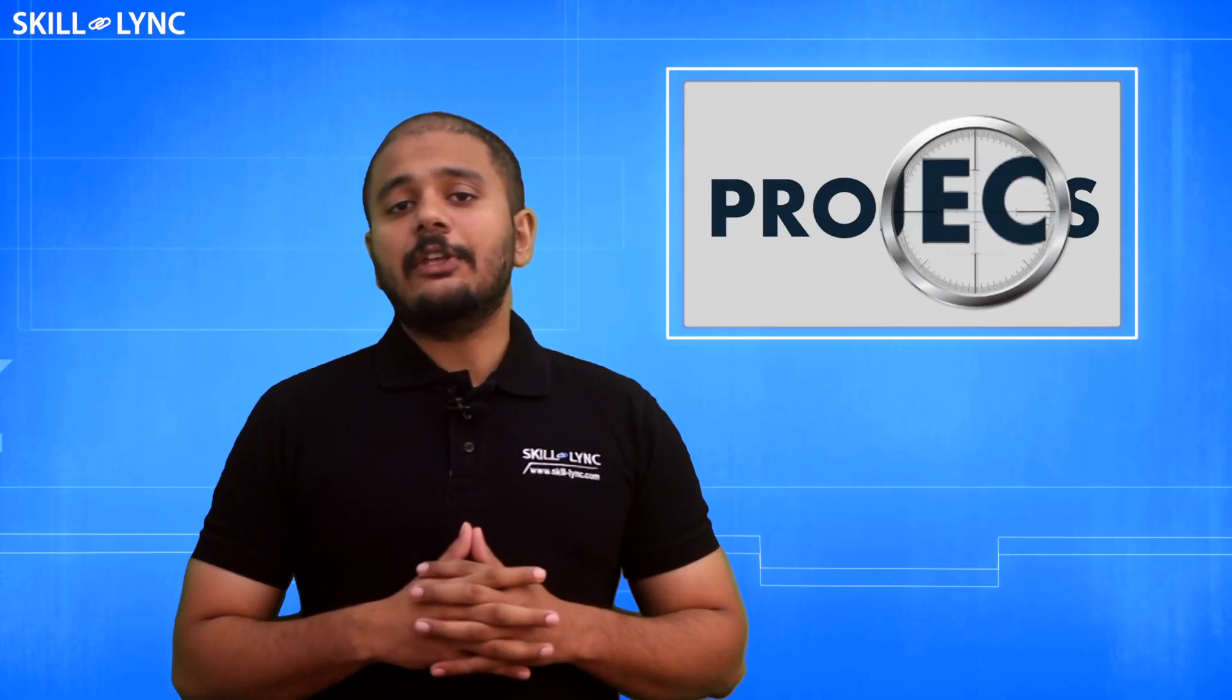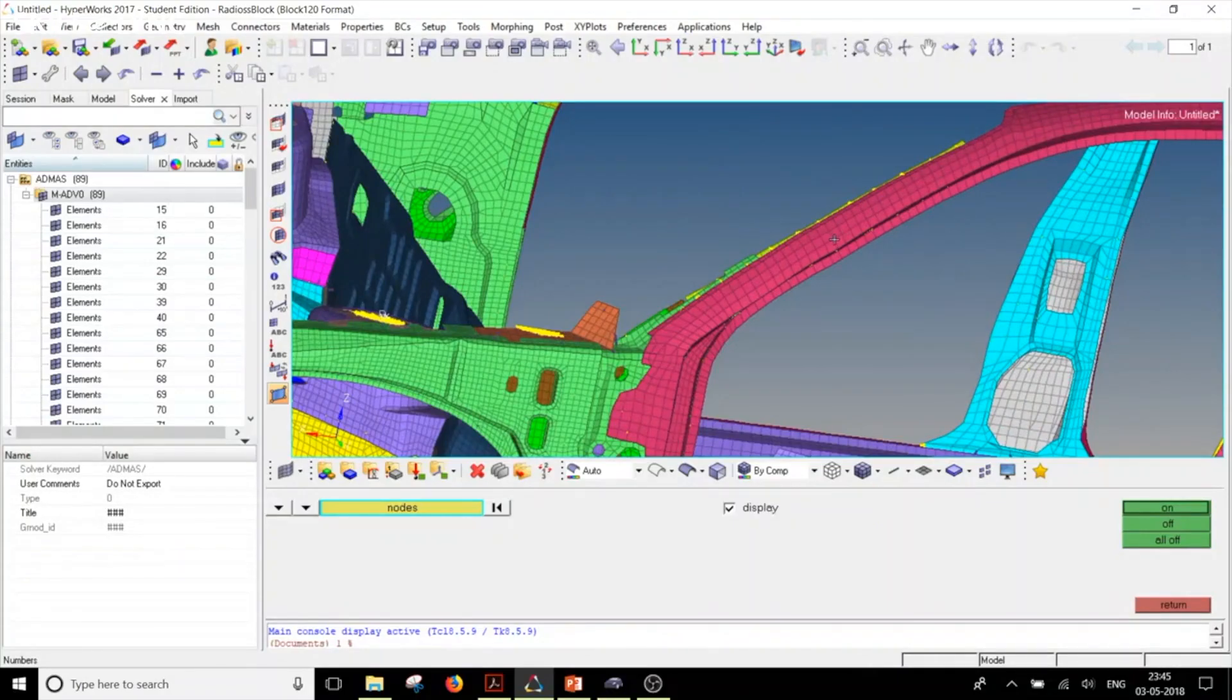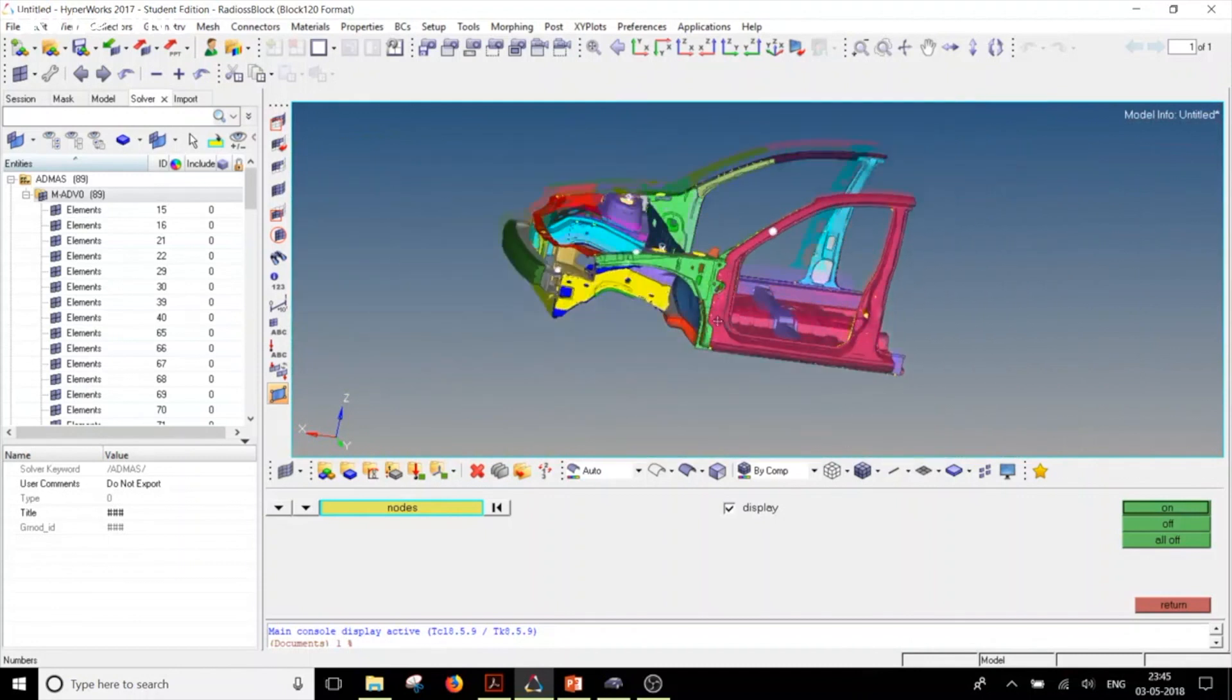As part of this course, you will be working on three projects. The first project will be a frontal crash analysis of a passenger vehicle's BIW component. BIW stands for body and void.